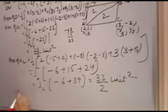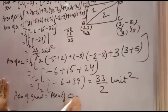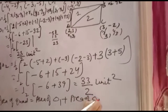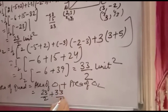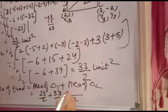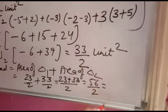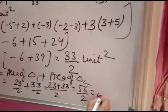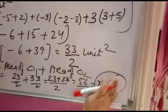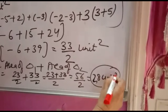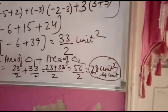Now the area of the quadrilateral equals area of triangle 1 plus area of triangle 2. Area of triangle 1 is 23/2 and area of triangle 2 is 33/2. With LCM 2, 23 plus 33 gives 56, and 56 over 2 equals 28. So 28 square units is the answer. You can write unit square or square unit — both are correct.